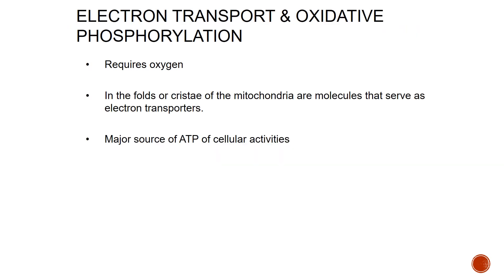The next stage after the citric acid cycle is the electron transport system and oxidative phosphorylation. Both of these are considered aerobic because they require oxygen. This process moves from the matrix of the mitochondria into the folds, or cristae, of the mitochondria — which provide lots of surface area. This is where we have the bulk of our ATP produced for cellular activities.